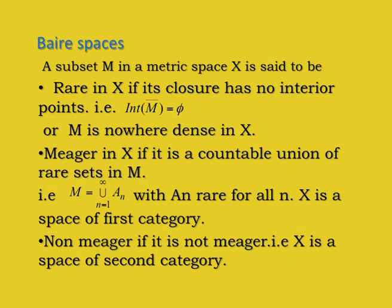A subset M in a metric space X is said to be rare in X if its closure has no interior points, i.e., the interior of M̄ is empty. We also say M is nowhere dense in X. M is meager in X if it is a countable union of rare sets: M = ∪(n=1 to ∞) Aₙ with Aₙ rare for all n. We say X is a space of first category if it can be expressed as a union of rare sets whose interior of closure is empty. A metric space X is of second category if it is non-meager, that is, it is not meager.